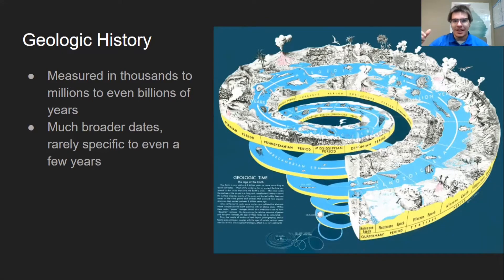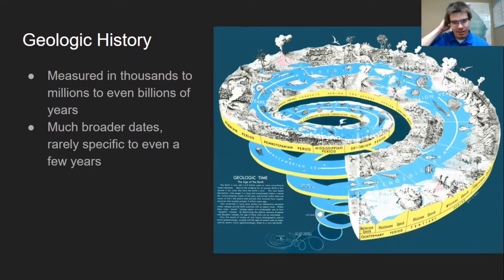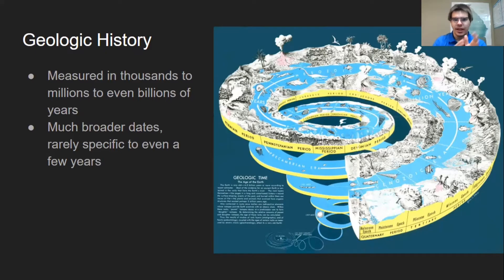Whenever you pick up a history book, you expect it to have dates, right? Well, this isn't exactly the same kind of dates. This is more ranges of dates. So like, the dinosaurs went extinct about 67 million years ago, but we don't know what day. Most of them didn't go extinct in a single day — they went extinct over the course of thousands of years. So it's very hard to tell exactly when something happened.